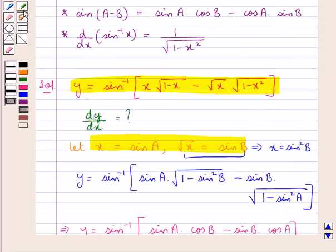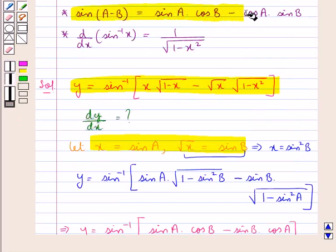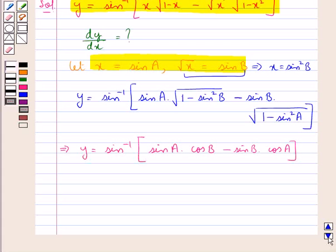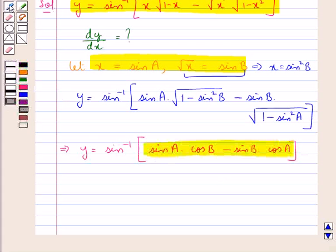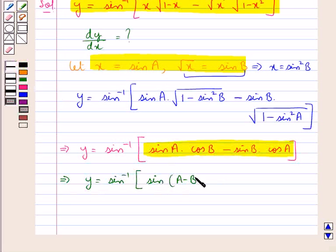From the key idea, sin of (a minus b) equals sin a cos b minus cos a sin b. Using this, in place of that expression we get y is equal to sin inverse of sin of (a minus b). This means y is equal to a minus b.